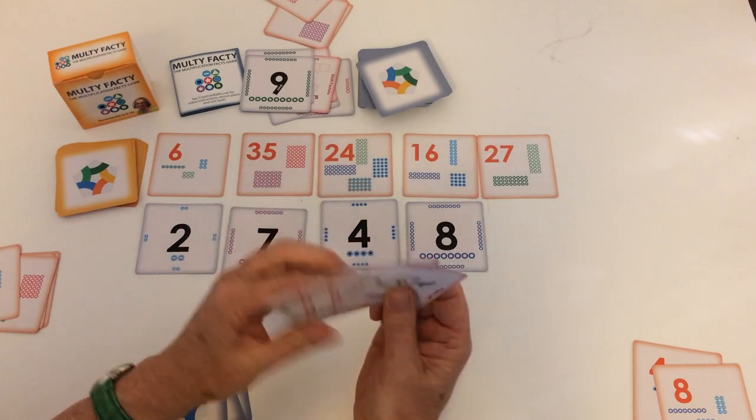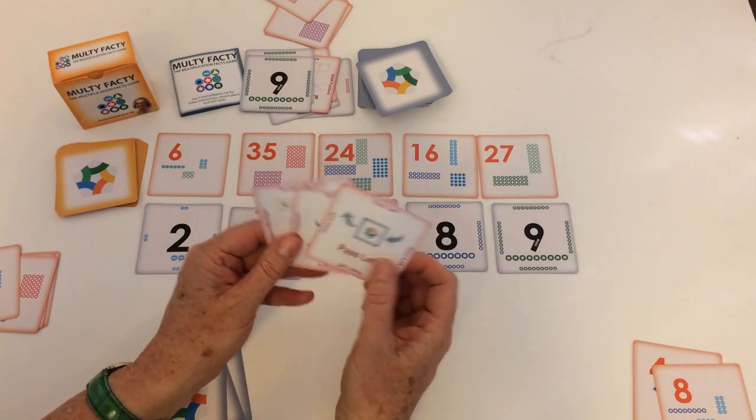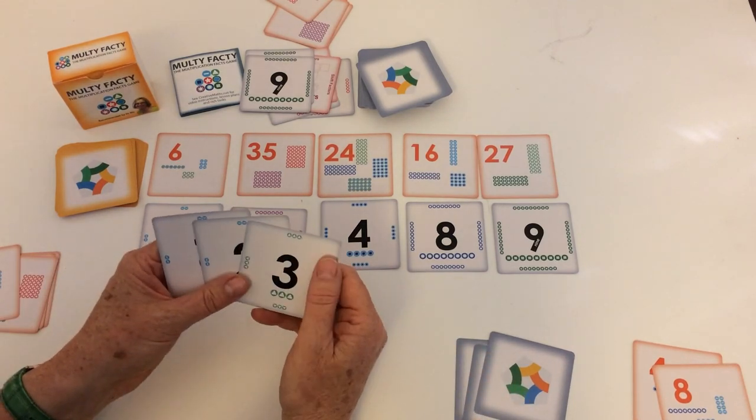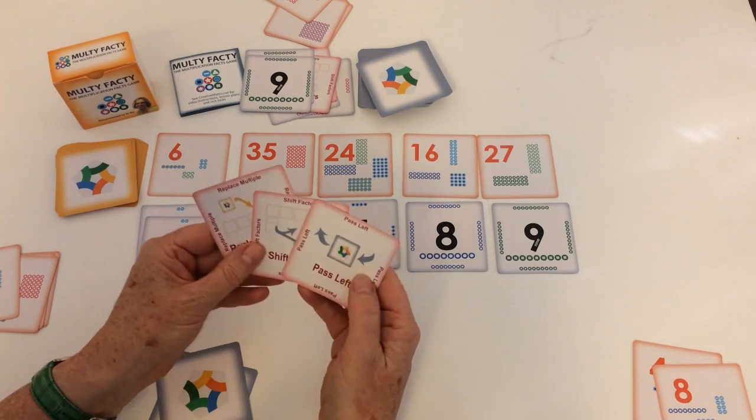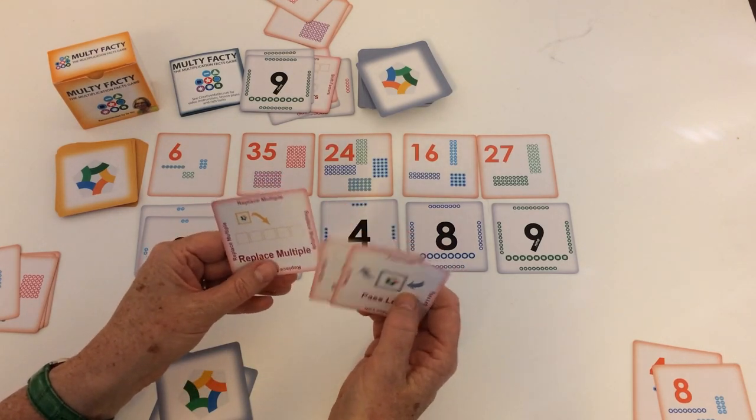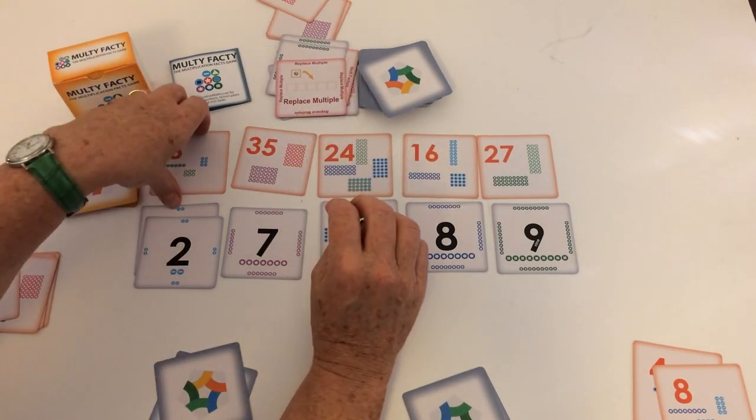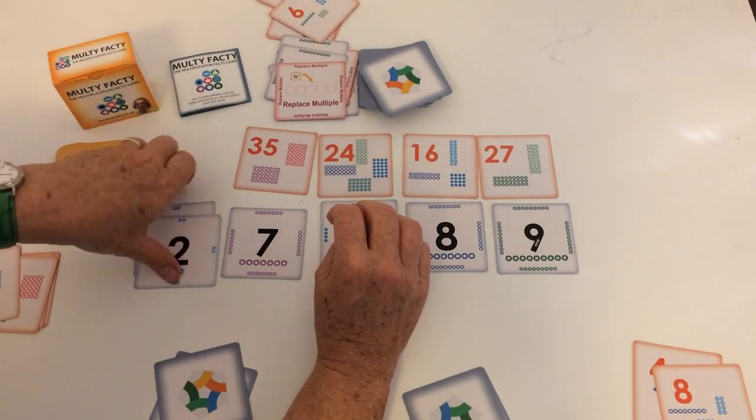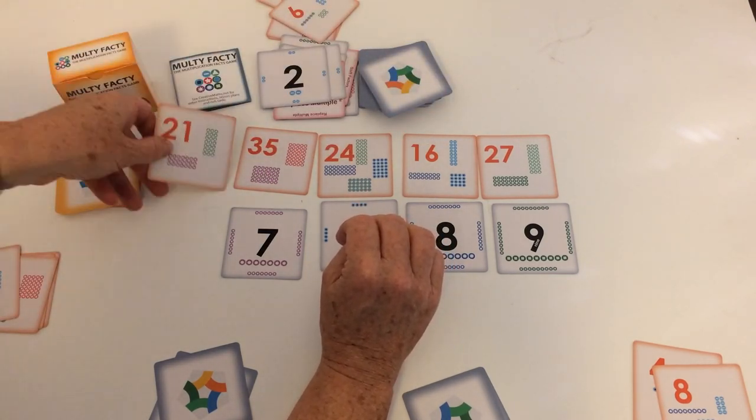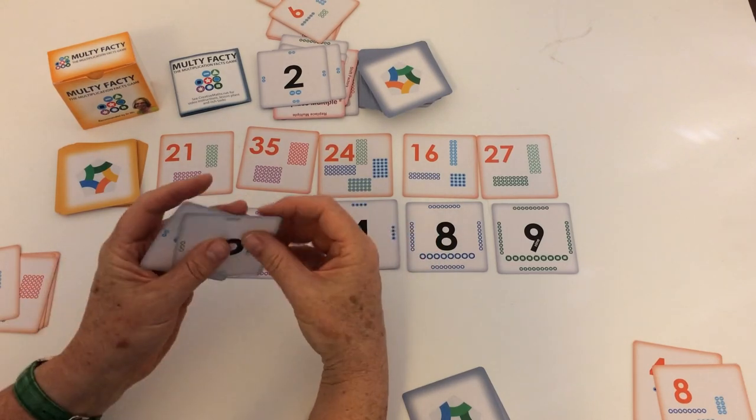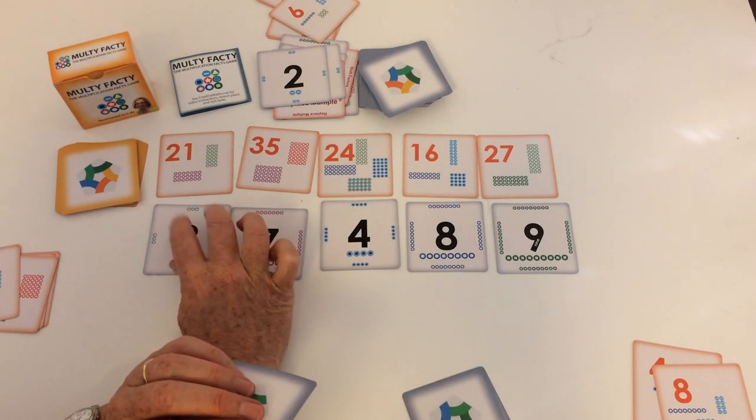So this player goes, hmm, I wonder if that other person wants to play some threes and puts a nine down and really annoys me. Well, I'm going to replace the multiple here. So I'm going to replace that one. That one just gets thrown out. They get thrown out. Put a new multiple up. Now it's this person's turn. I can still play a three, so that's good.